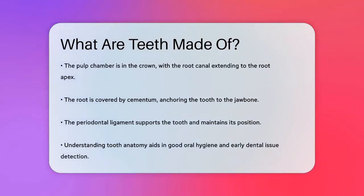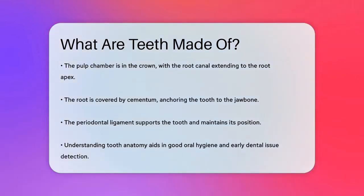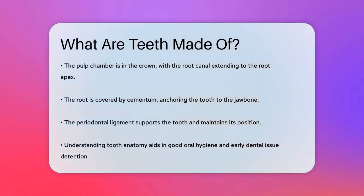The root of the tooth is covered by cementum, a thin layer of bone-like tissue that anchors the tooth to the jawbone via the periodontal ligament. This ligament is a fibrous sac that supports the tooth and helps maintain its position in the jaw.